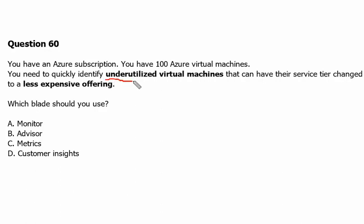In this question, the examiner would like to see our understanding of selecting a service to save costs — determining what is underutilized so we can reduce spending. Option A is Azure Monitor, a comprehensive monitoring solution for collecting, analyzing, and responding to monitoring data from cloud and on-premise environments. This is not the correct answer since it does not help save costs.